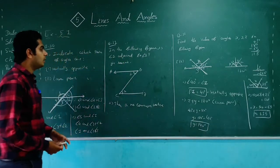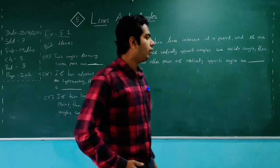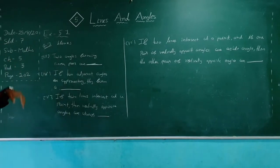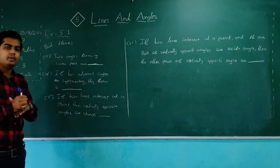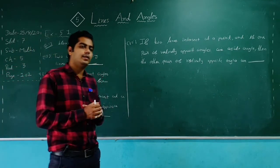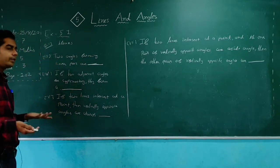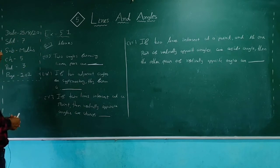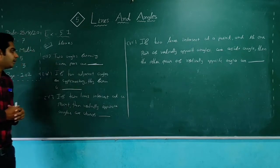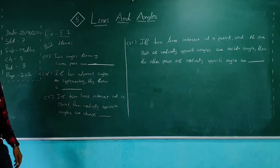Moving on to question number 13 — fill in the blanks. The first blank: complementary angles sum to 90°. The second blank: supplementary angles sum to 180°. So the answers for blank 1 and blank 2 are 90° and 180° respectively. Third blank: two angles forming a linear pair are supplementary, because their total is 180°.